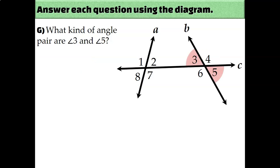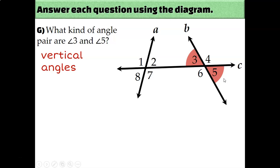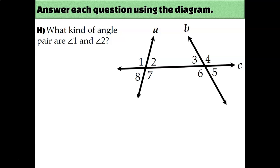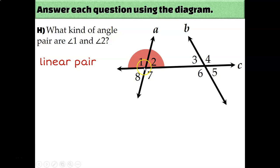What kind of pair of angles is angle 3 and angle 5? This is actually an old school question — these are vertical angles. Line A has nothing to do with it; angles 3 and 5 are non-adjacent angles created by the intersection of two lines, which makes them vertical angles. And what kind of angle pair are angles 1 and 2? That's also old school — they're a linear pair, because line C is a straight line and line A comes off of it. Angles 1 and 2 are adjacent angles whose non-common sides are opposite rays.